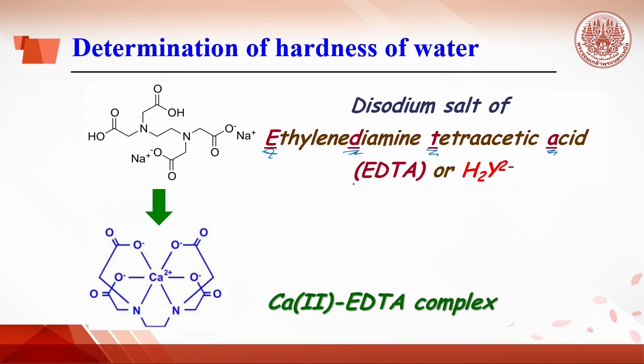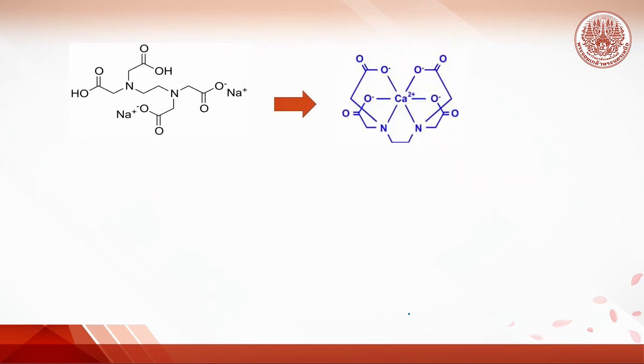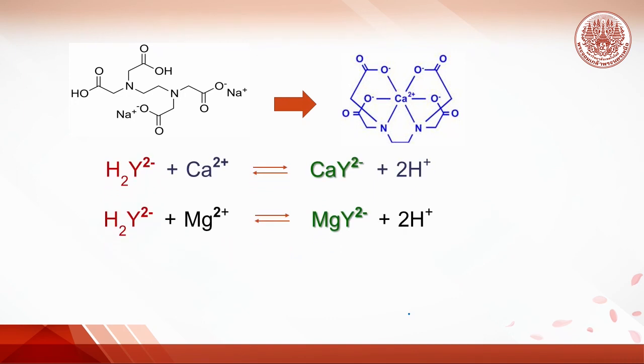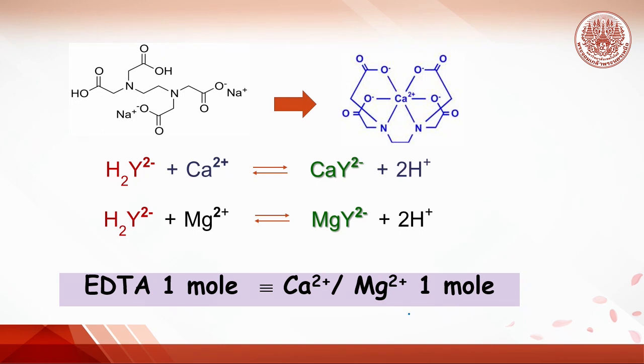This reagent is normally used in the form of disodium salt. EDTA can react with calcium or magnesium ion in basic solution to form a water-soluble complex. EDTA disodium salt is present as H2Y ion. When it reacts with magnesium ion or calcium ion, the equation is as following. It can be concluded that the reaction of EDTA and metal ion is 1 to 1 mole ratio.